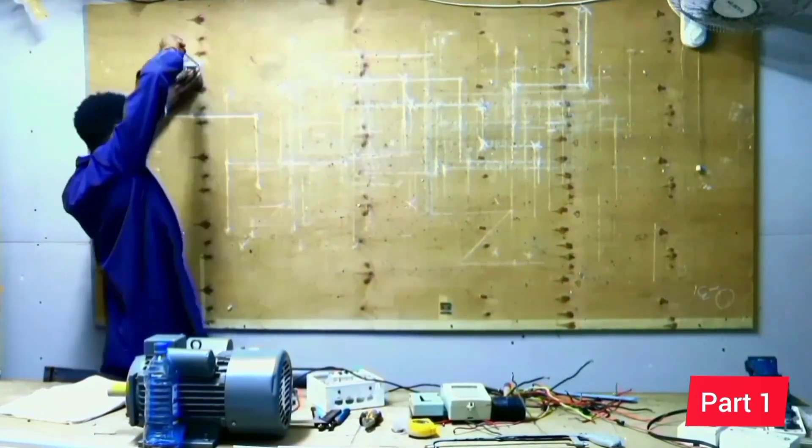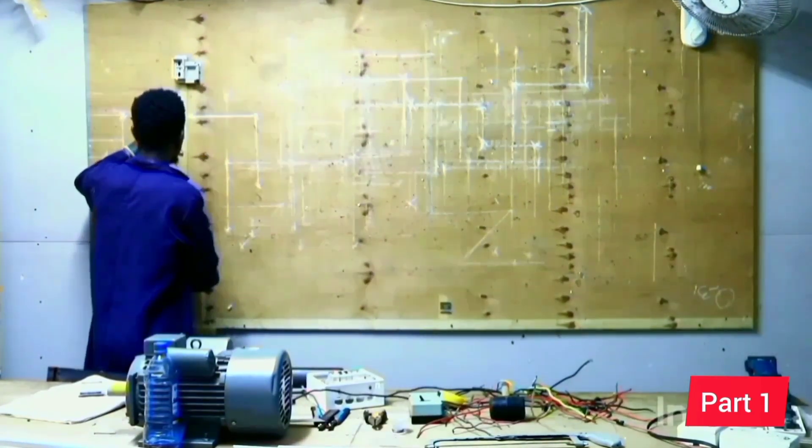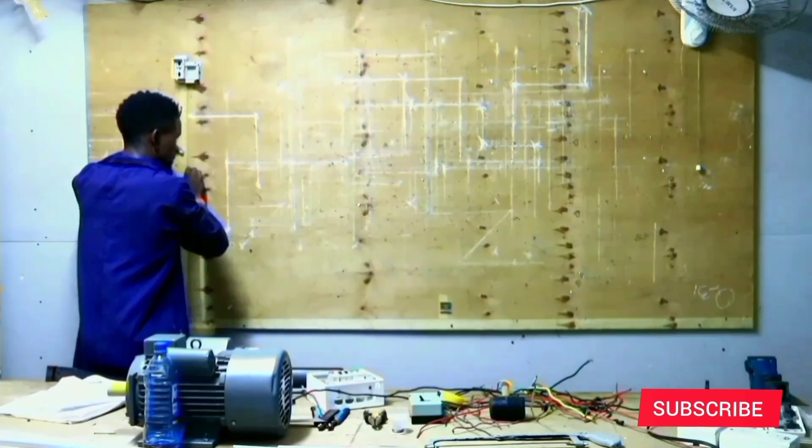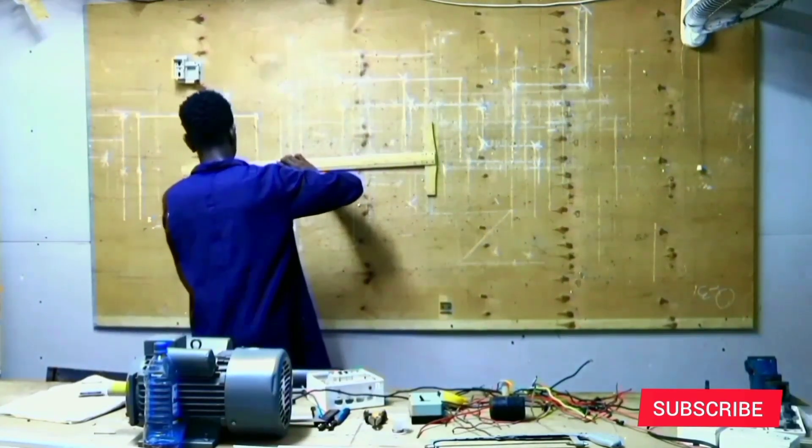Our first component is the single phase cutout. It simply connects our wiring to the main supply. It contains a fuse of 6 to 8 amperes which cuts off power supply to our property when there's a short circuit.